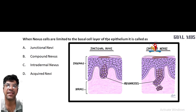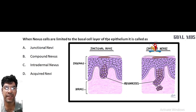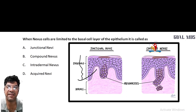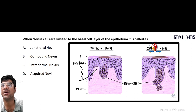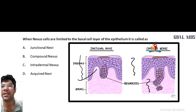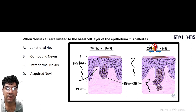When nevus cells are limited to the basal cell layer of epithelium it is known as junctional nevus. Compound nevi are present in both the epidermis and the dermis. Intradermal nevi are entirely within the dermis.